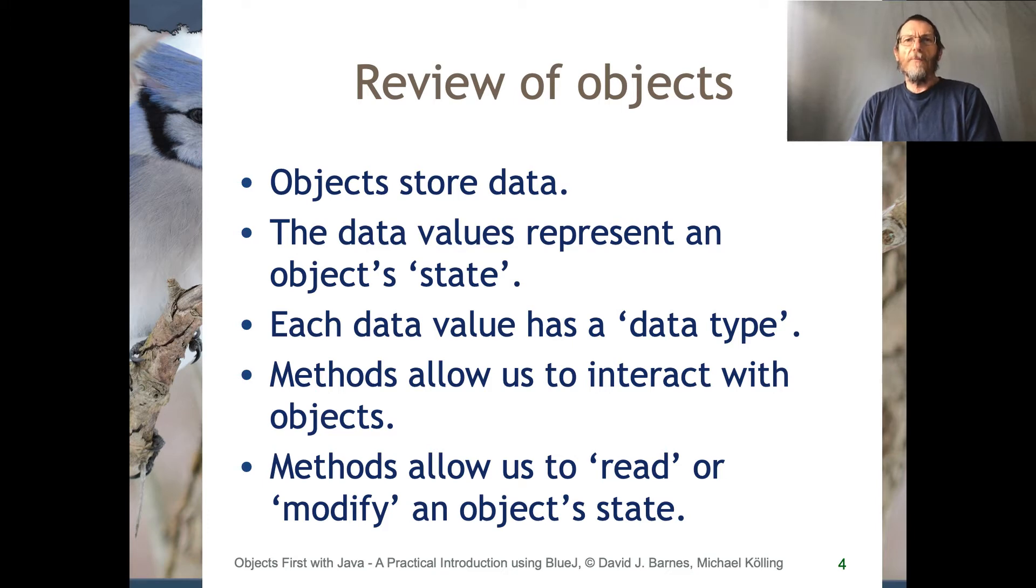How do these differences between objects such as triangles and ships come about? It's because they're created from different classes and those classes contain the source code for both the data that its instances must store and the methods they must respond to.